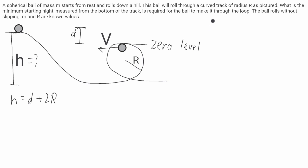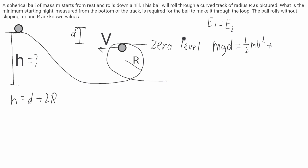I'll start with the energy equation, assuming no non-conservative forces, so initial energy equals final energy. The initial energy is the gravitational potential energy: mgh = mgd, since d is the height above the zero level. The final energy includes the translational kinetic energy, ½mv², and the rotational kinetic energy, ½Iω².